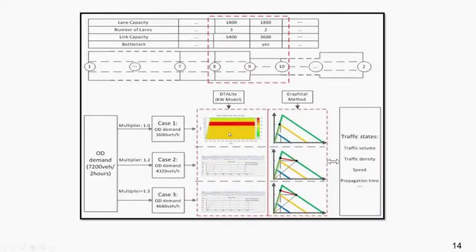I will go through three different cases with different demand multipliers to illustrate how traffic congestion propagates. We have nodes 1, 2, 3, 4, 5, 8, 9, and 10. The link from 8 to 9 has three lanes; from 9 to 10 has two lanes. So node 9 is the interfacing node at the bottleneck.